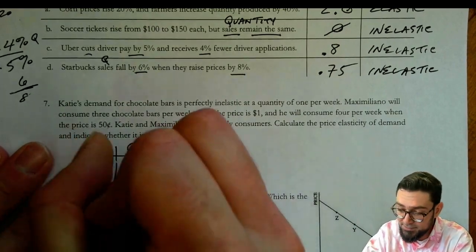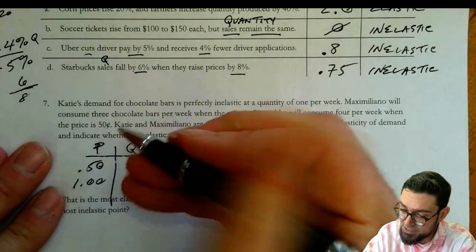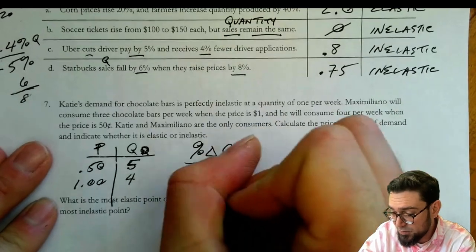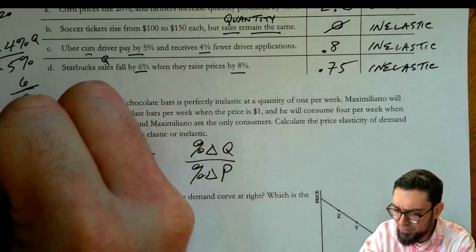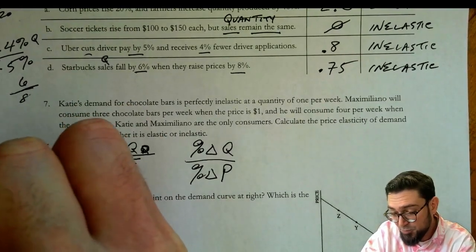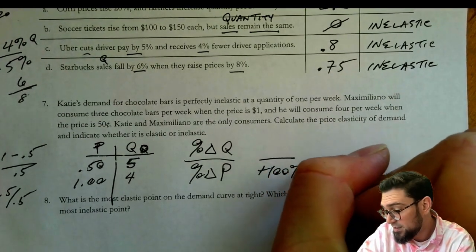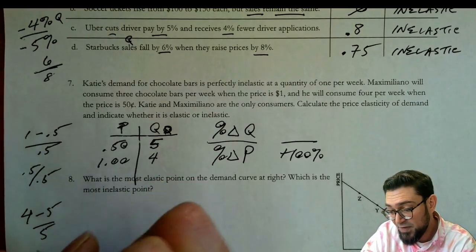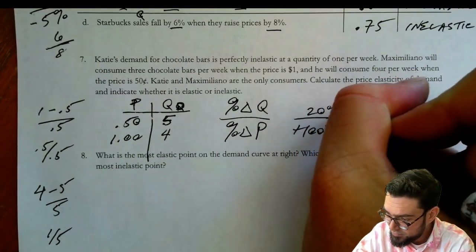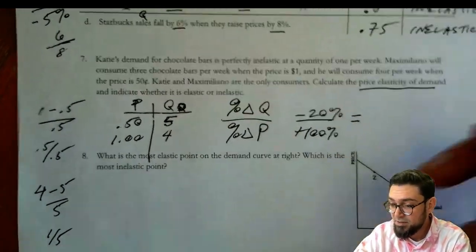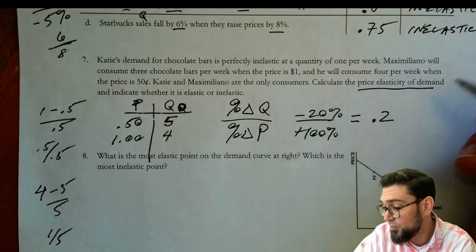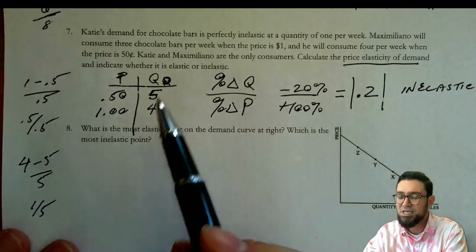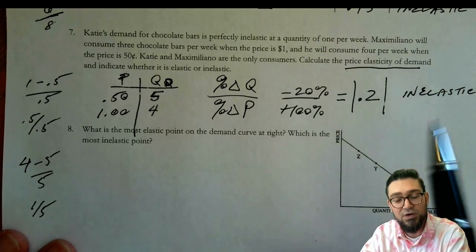At $1.00, Katie is still buying one and Maximiliano is buying three, so there are four. So when price goes from $0.50 to $1.00, quantity demanded goes from five to four. We do the percent change in quantity over the percent change in price. The price change is 0.5 over 0.5, so that's a 100% increase in price. The quantity change is: new value four minus old value five over five, which is one fifth — that's 20%. So the price elasticity of demand is 20% over 100%, which is 0.2. As an absolute value that's less than one, so it is inelastic.